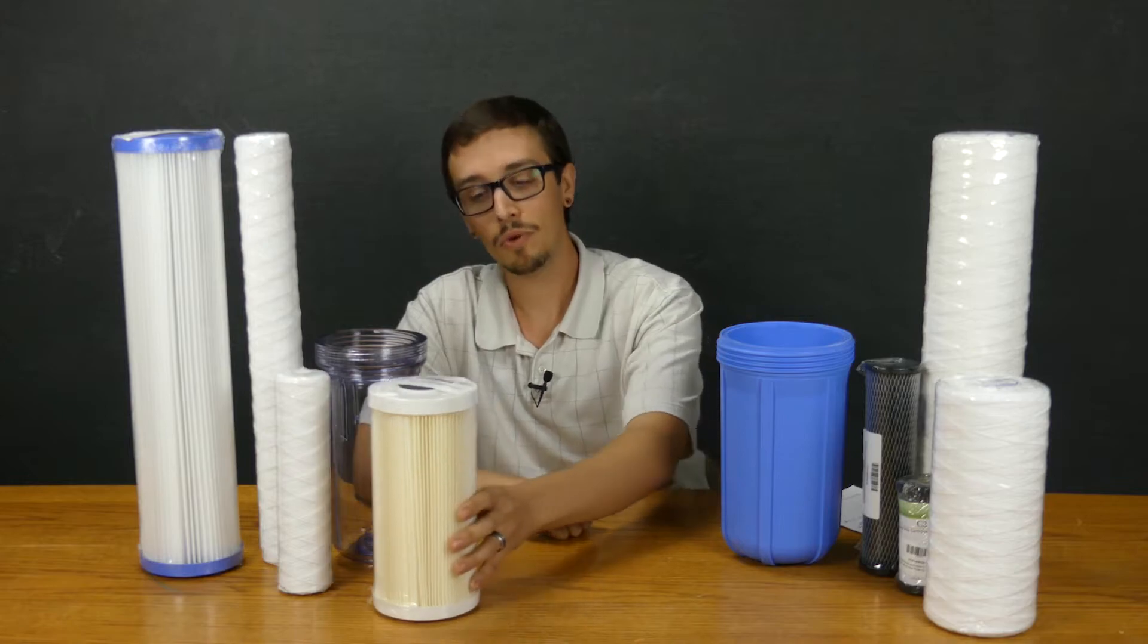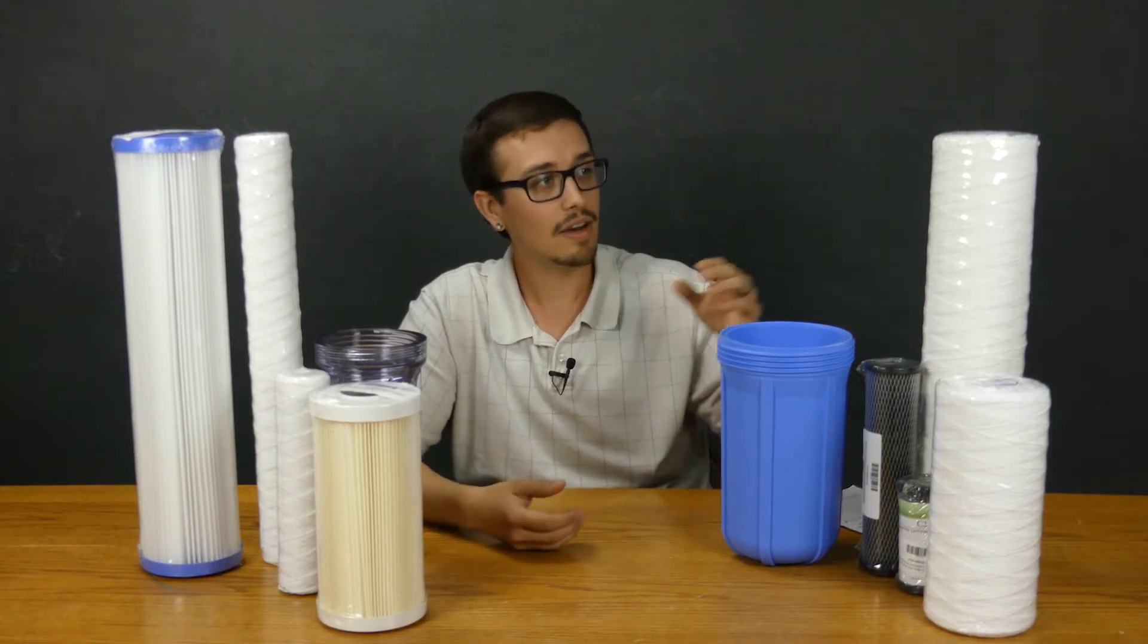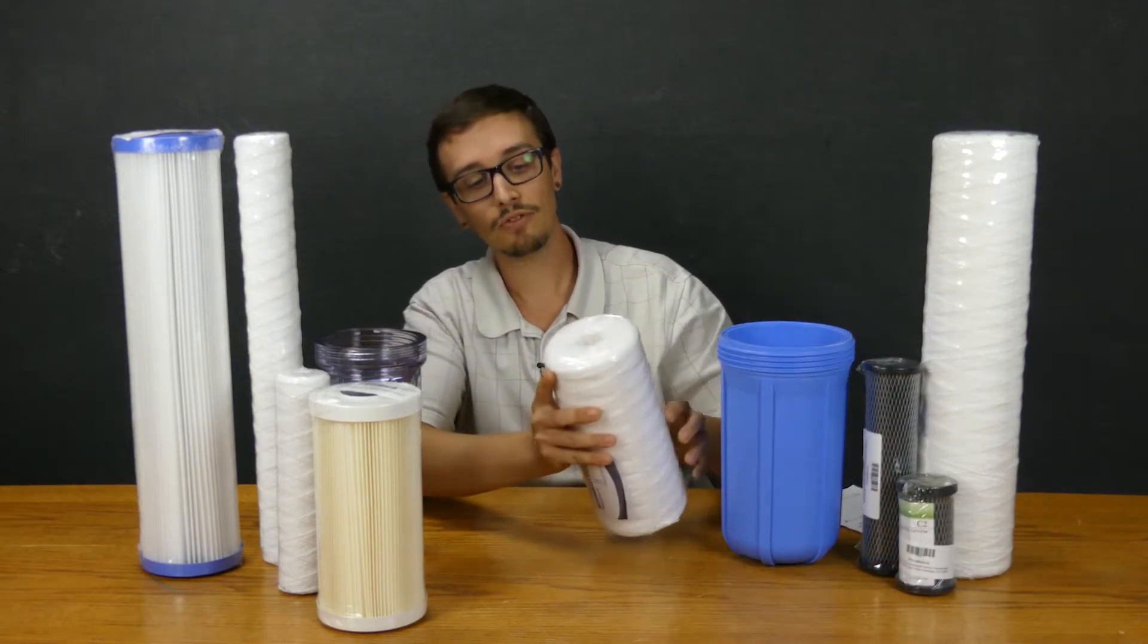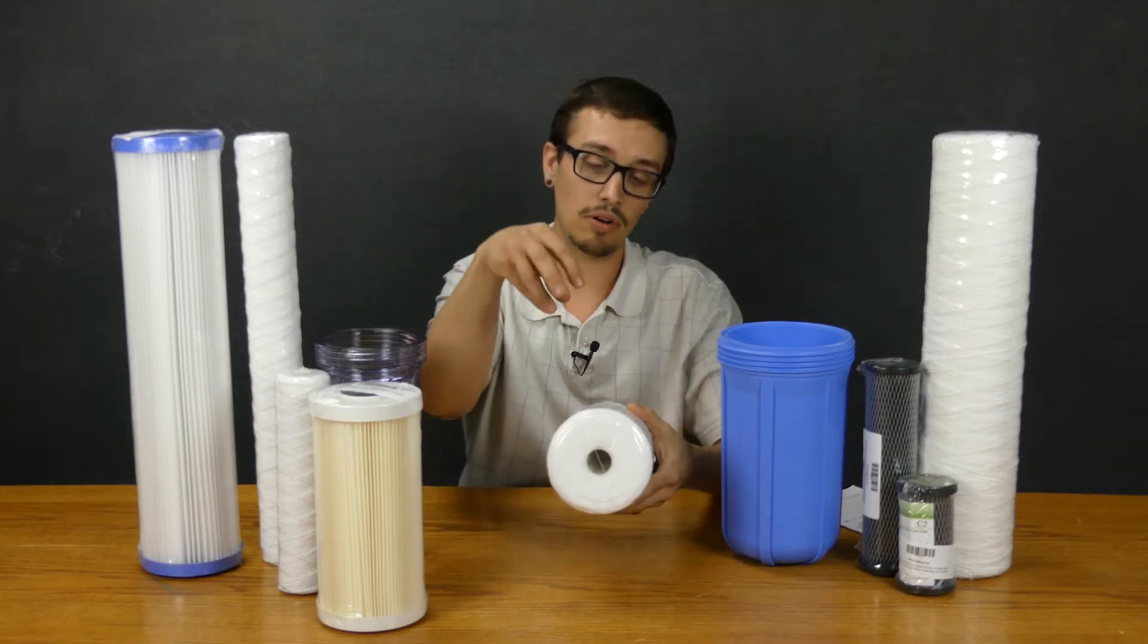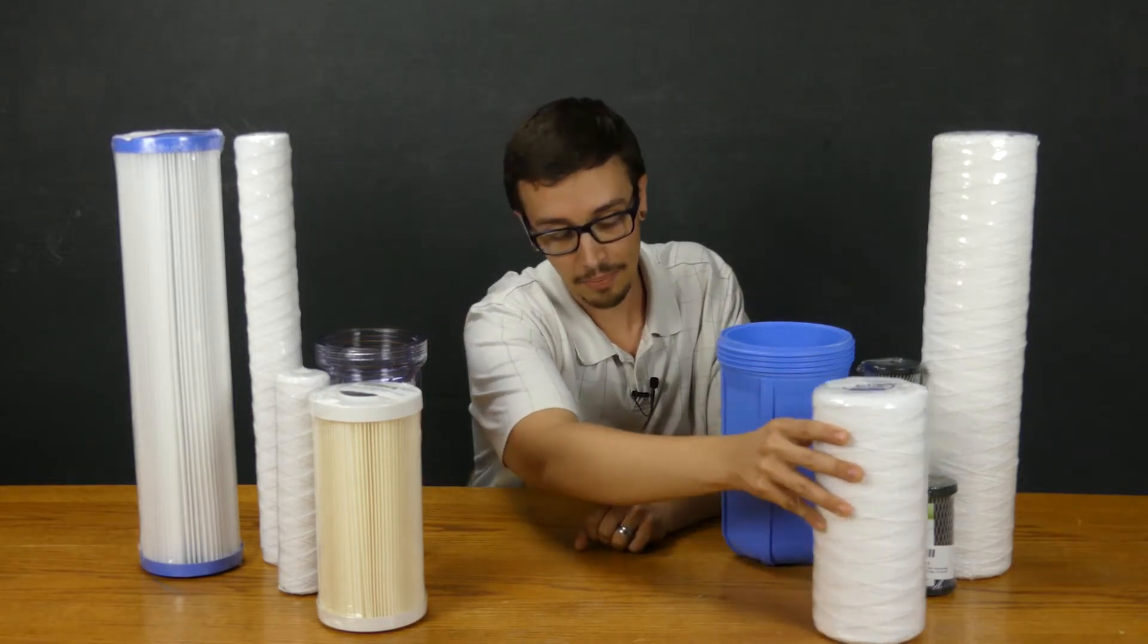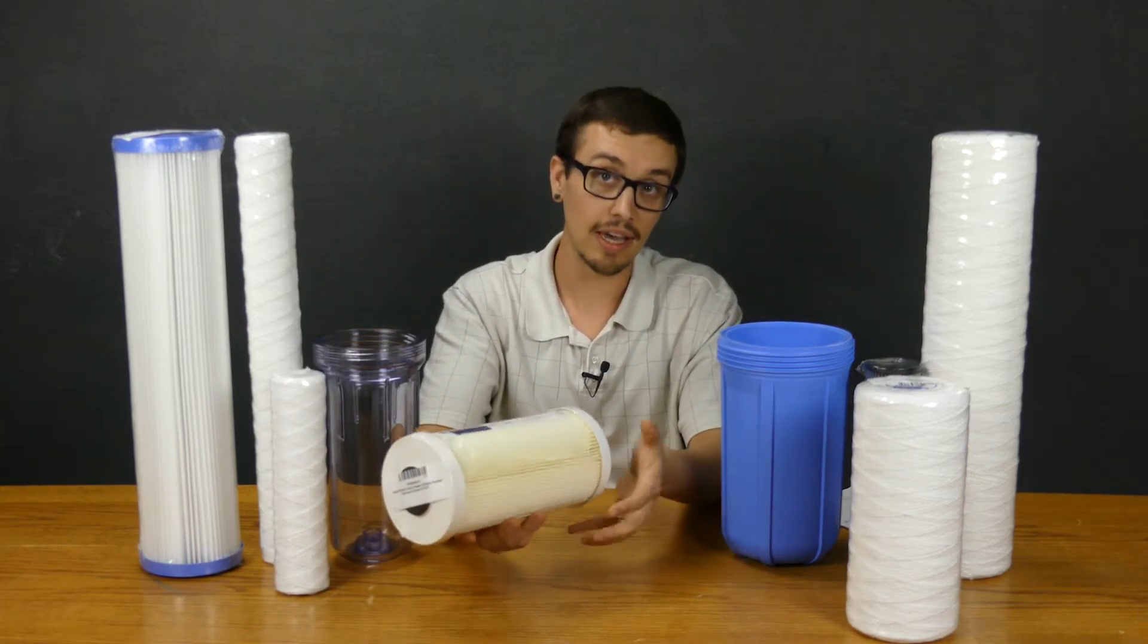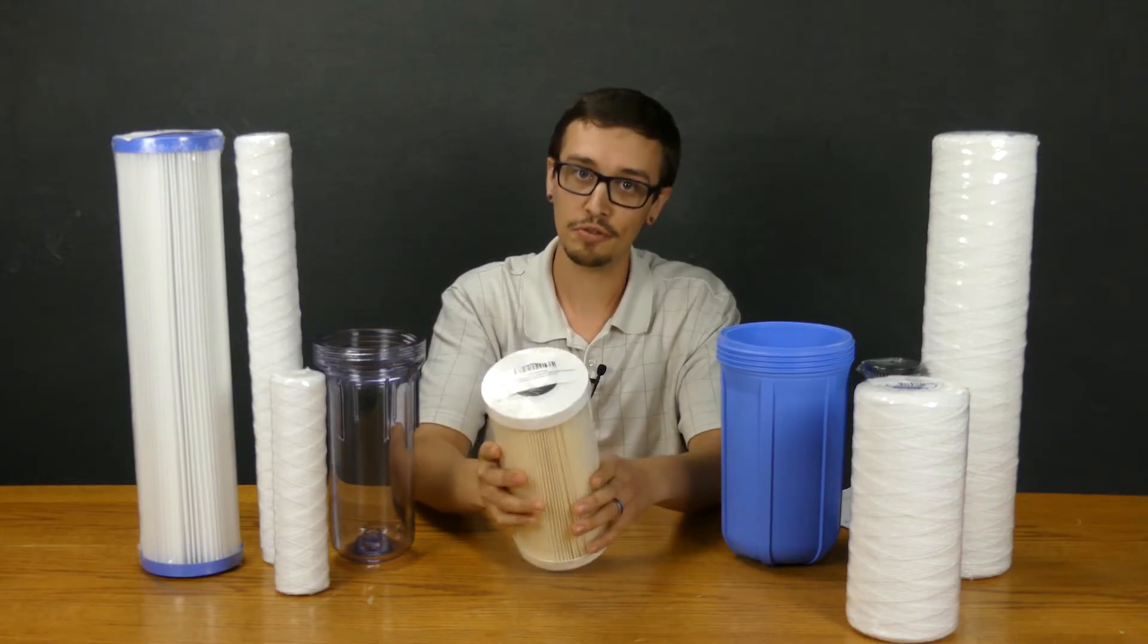The downside with pleated filters though is they don't have the density of these string type filters. If you look at a string filter, the string goes all the way through the body of the filter here. So the particles and sediment can weave their way in and really saturate and fill the filter up before it's completely shut off. Whereas with a pleated type filter, the surface is what you get. Once the surface is completely covered, it's time for a new filter.